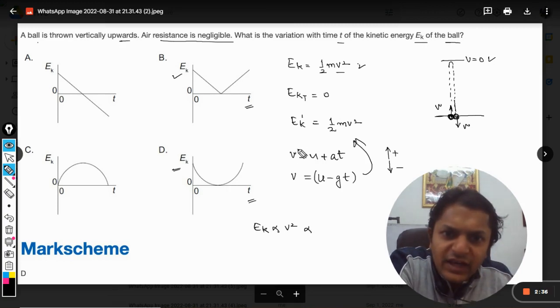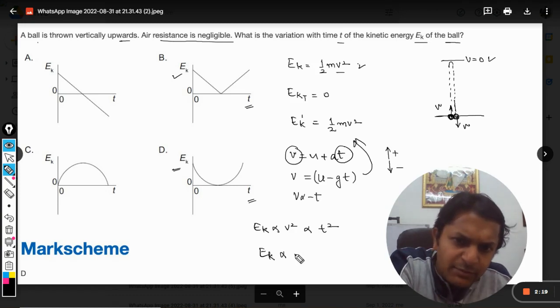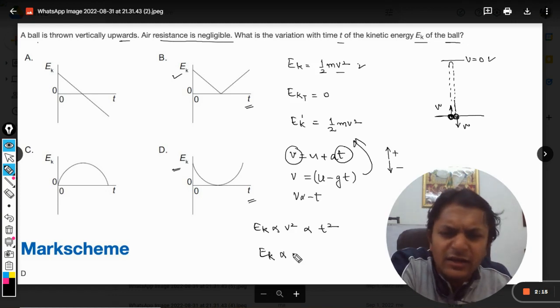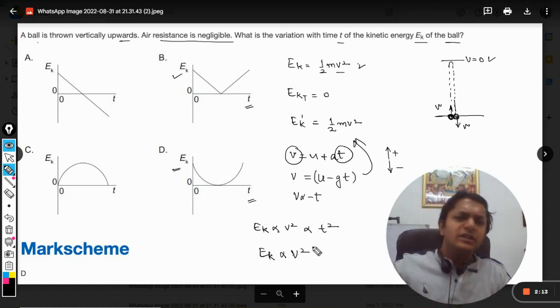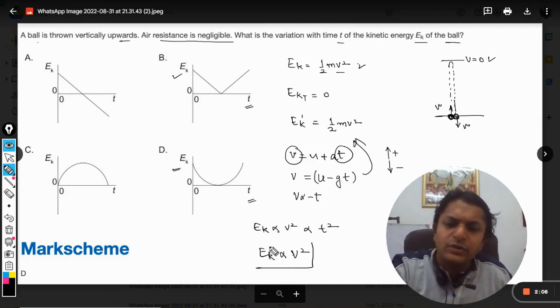And v is directly proportional to t, so v squared is directly proportional to t squared. So I can always say that Ek is directly proportional to... Well, there is a negative sign also here because I can say that v is equal to minus t. So it will become v squared, but it's a scalar quantity so the negative doesn't matter. So it will become v squared, so this will be t squared.